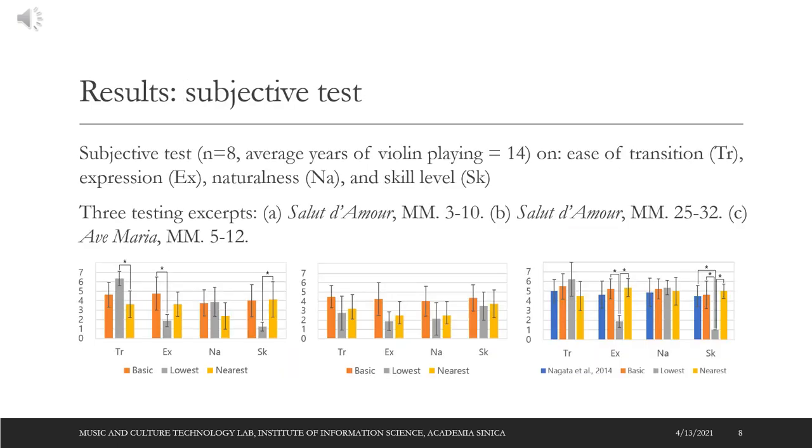Eight subjects are asked to assess each sample using seven point scales regarding the four targets: ease of transition, expression, naturalness, and skill level. Results on the first excerpt show that the lowest mode is easier for beginners than the nearest mode. However, for the second excerpt we got no significant differences between the three modes. This shows that the assessments of the same mode could be diverse. Comparing the proposed system with the baseline method, we find that the lowest mode of the proposed system has the potential to outperform the baseline.